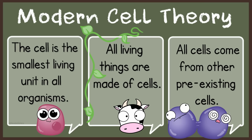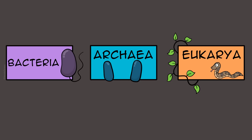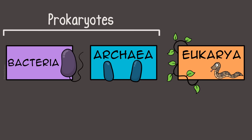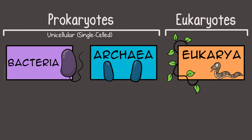First, just a refresher. Recall that the modern cell theory includes a statement that all living things are made of one or more cells — all living things. In the three domains of life, prokaryotes are organisms that can mean bacteria or archaea. They are unicellular, which means they are single-celled organisms. Eukaryotes are organisms that fit in the last domain, eukarya.